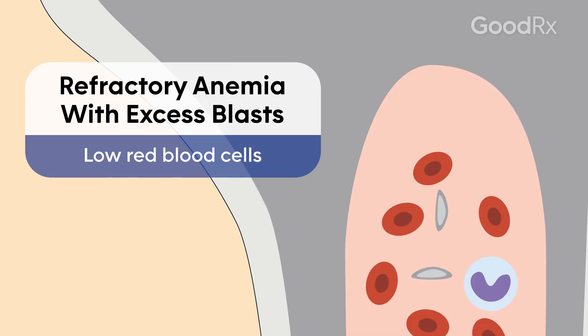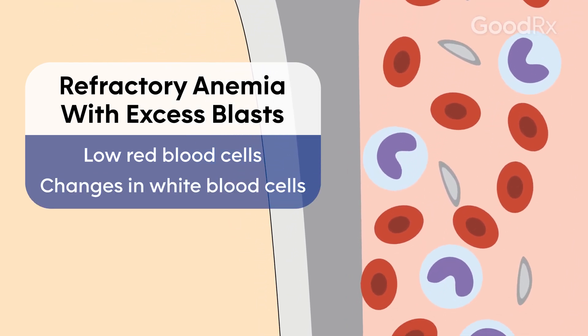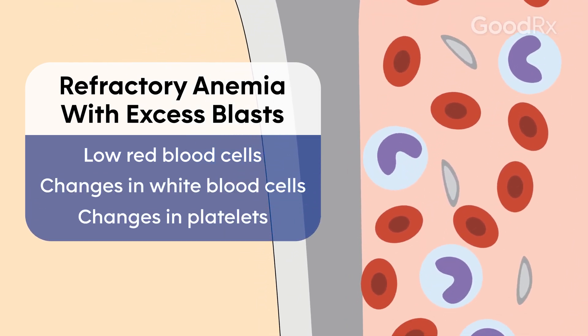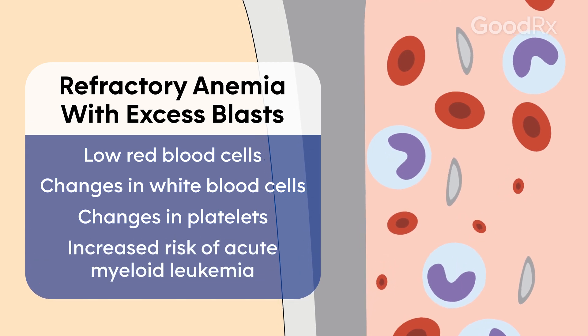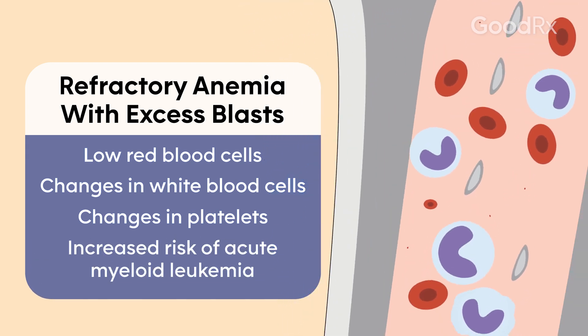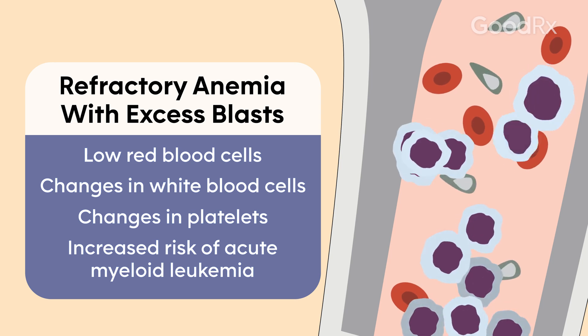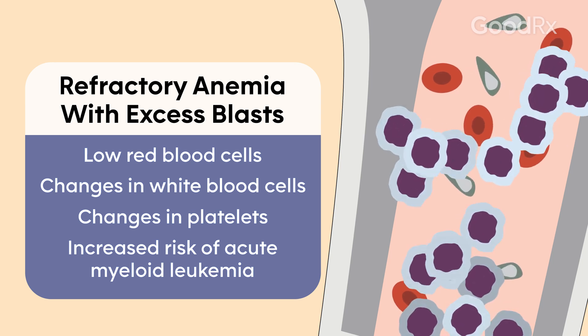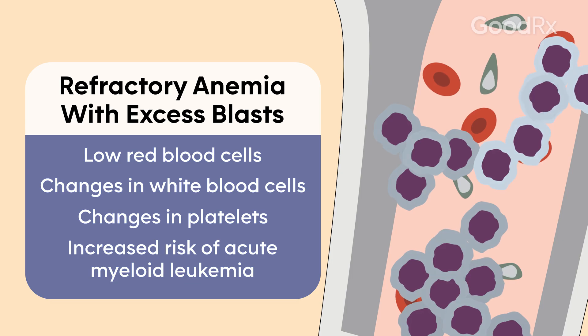Another class is refractory anemia with excess blasts. This is when there is a large increase in leukemia-like blast cells in the bone marrow that can lead to an increased risk of progression to acute myeloid leukemia.